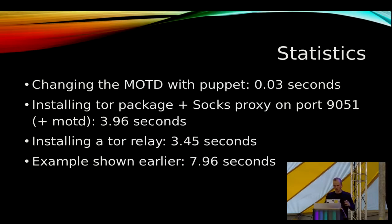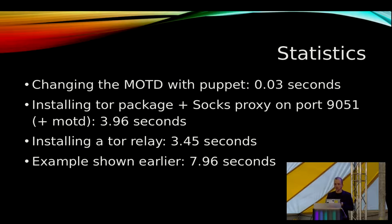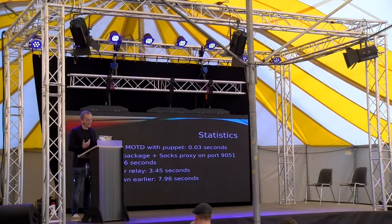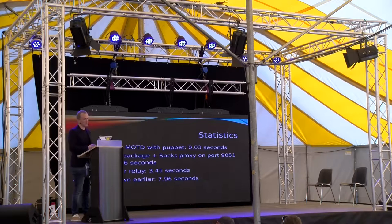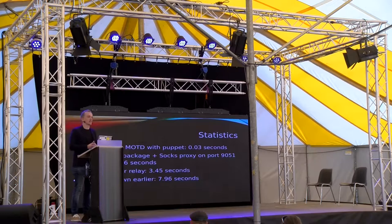Here are a few statistics showing how fast this is. With Puppet, just changing the message of the day takes 0.03 seconds. Installing the Tor package with a SOCKS proxy on port 9051 plus the message of the day takes less than four seconds — and keep in mind this depends on your internet connection speed. These statistics are based on an 80 Mbps connection at my home. Installing a Tor relay alone takes 3.45 seconds, and the full example with Apache, the hidden service, the relay, and a few other parts takes less than eight seconds.